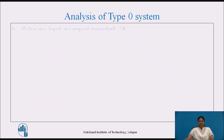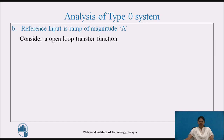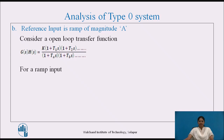Let's see the analysis of Type 0 system for the next reference input of ramp of magnitude A. Consider the open loop transfer function of a Type 0 system: G(S)H(S) equal to K into (1 + TS) divided by (1 + TS)(1 + TS). For a ramp input, the error coefficient is given as Kv equal to limit S tends to 0, S into G(S)H(S). After solving the limit, we get Kv equal to 0.